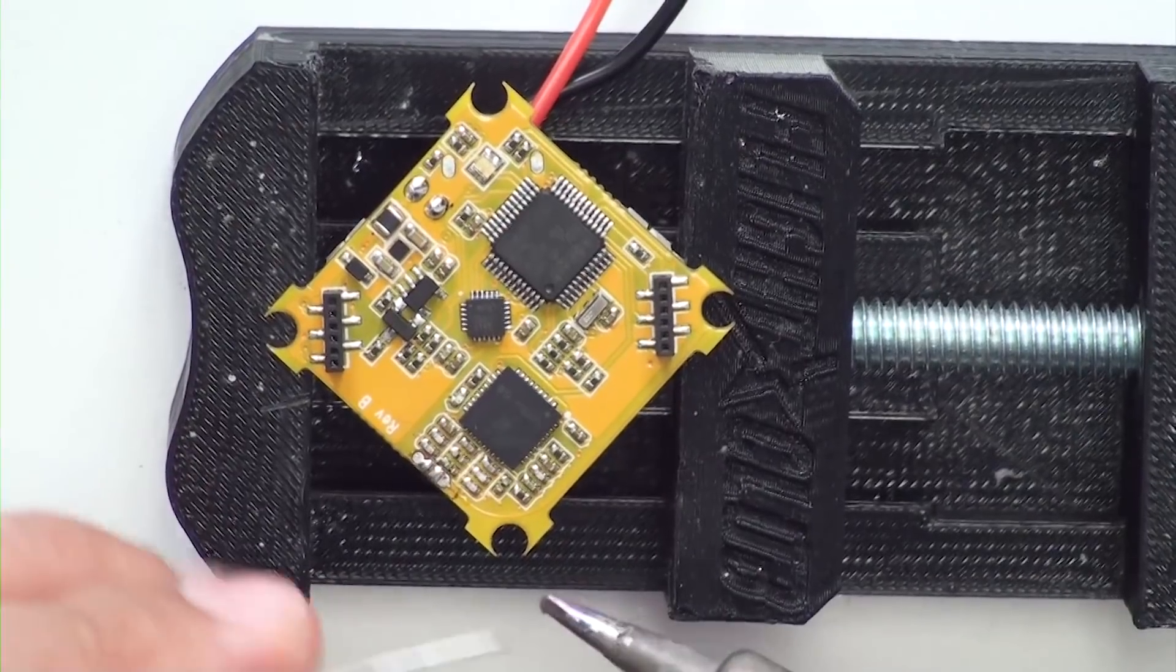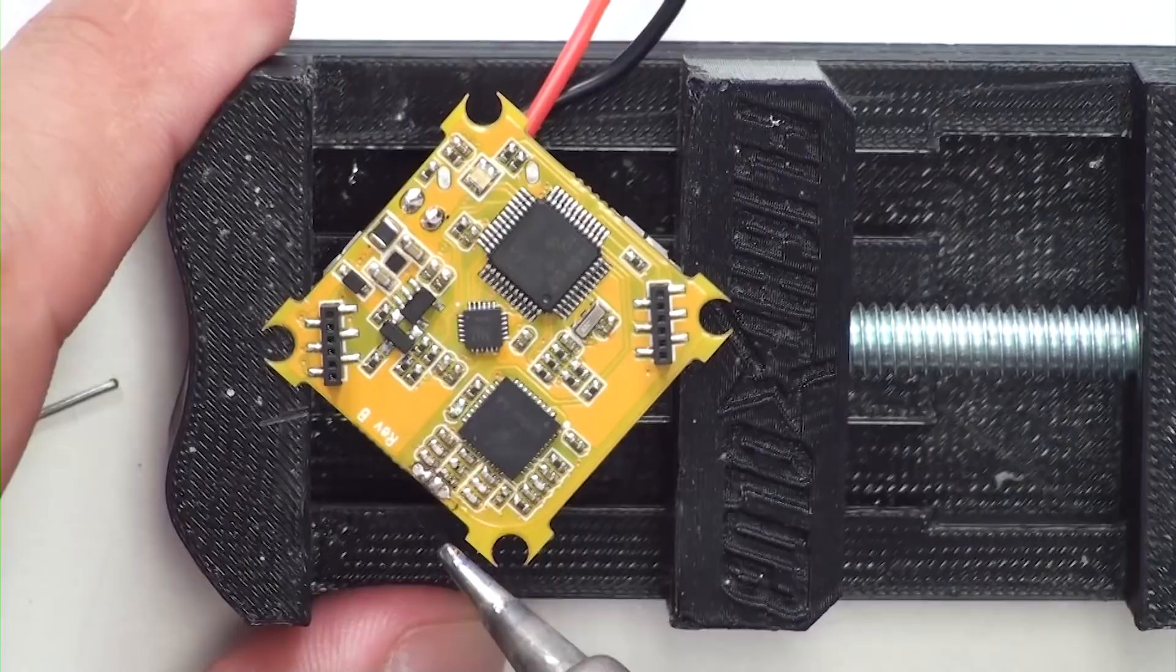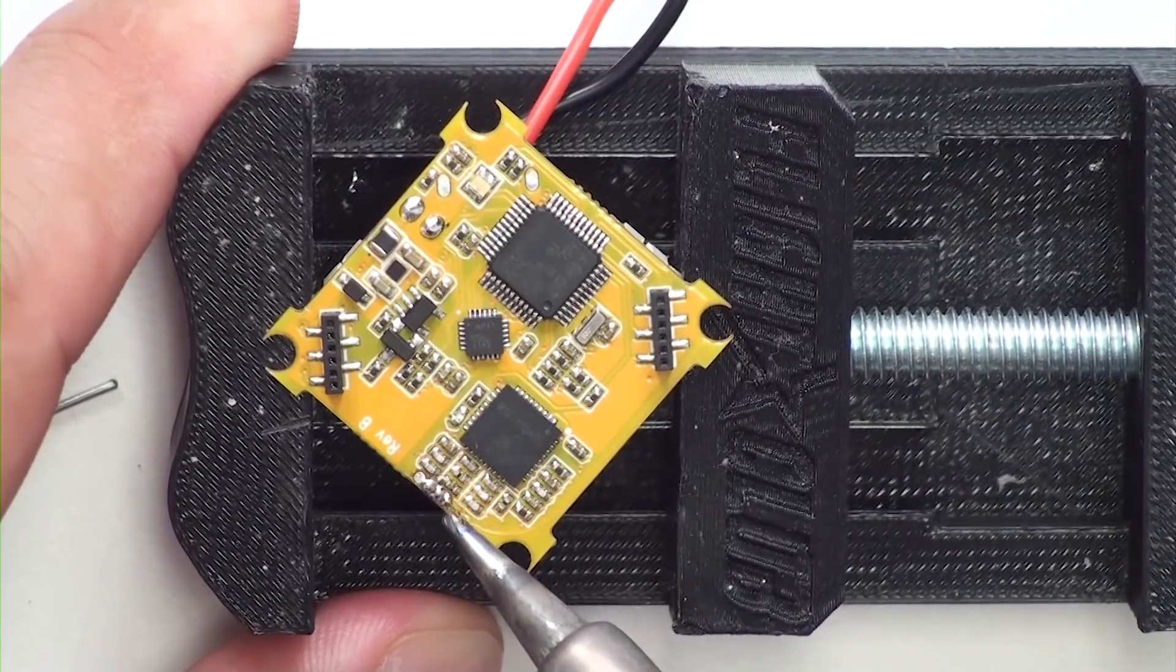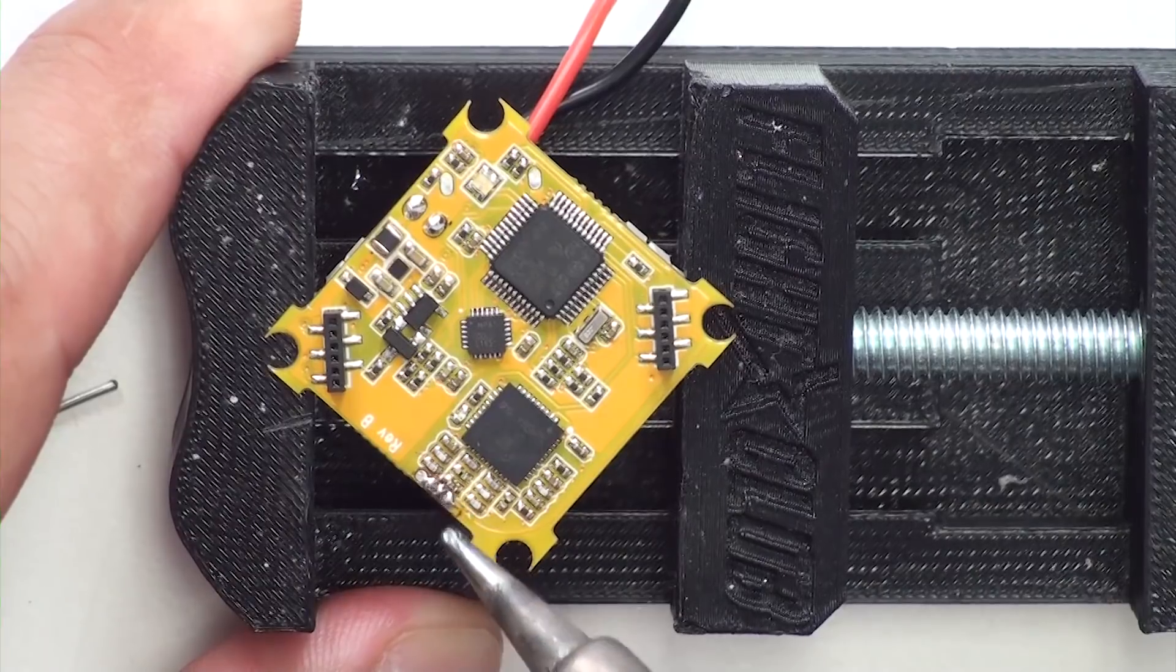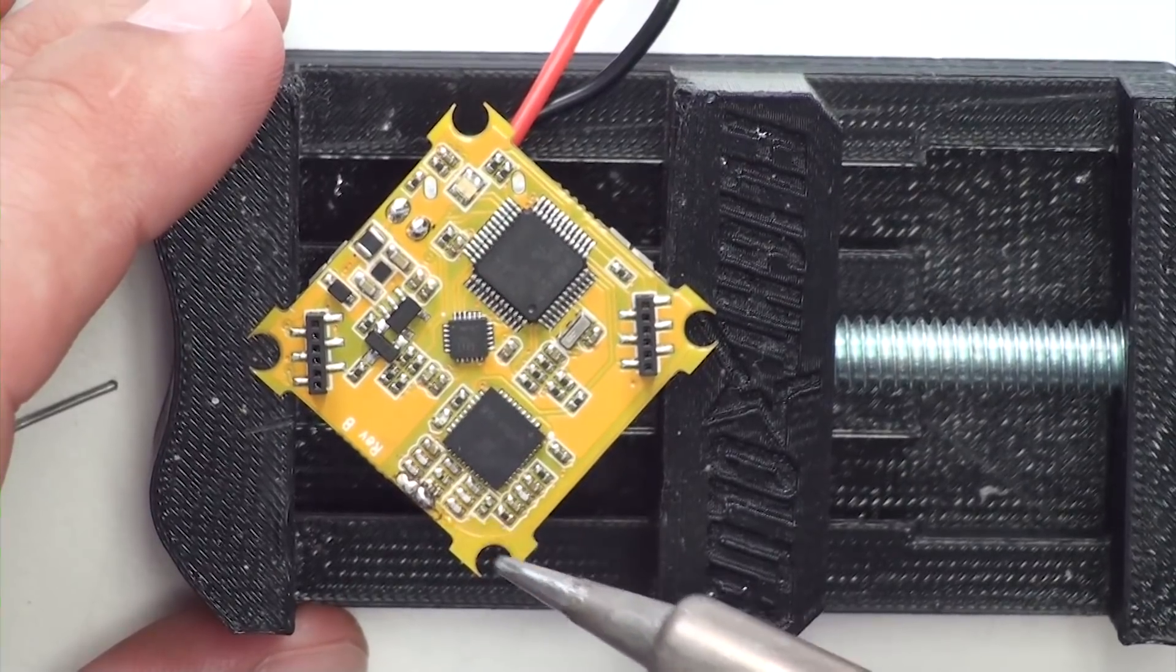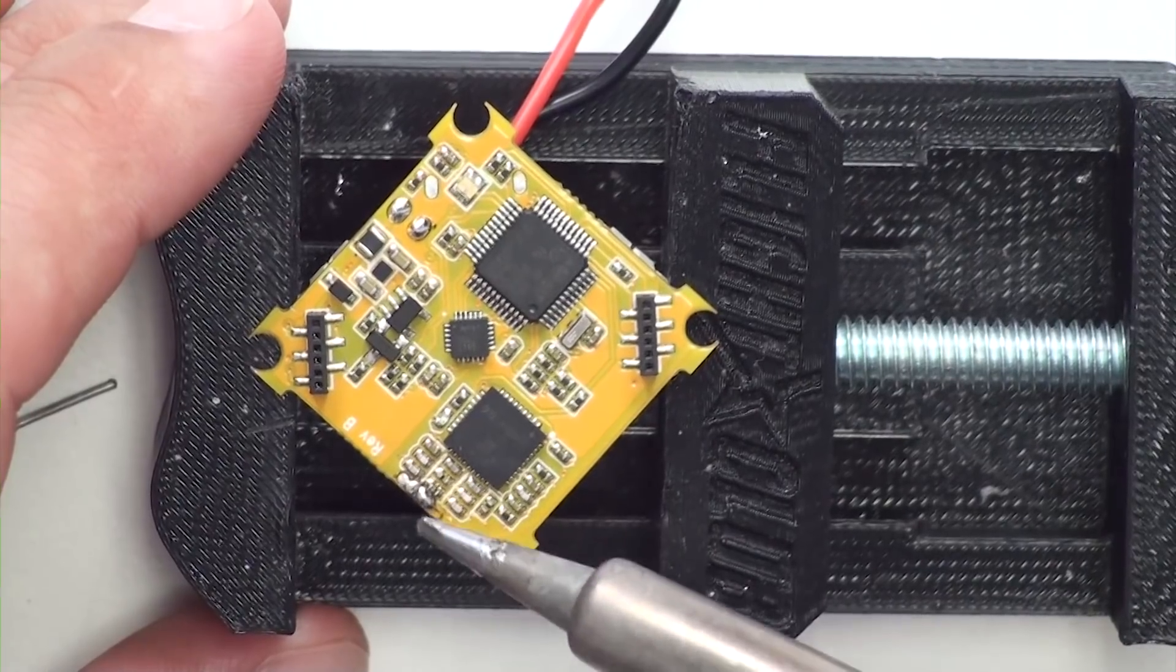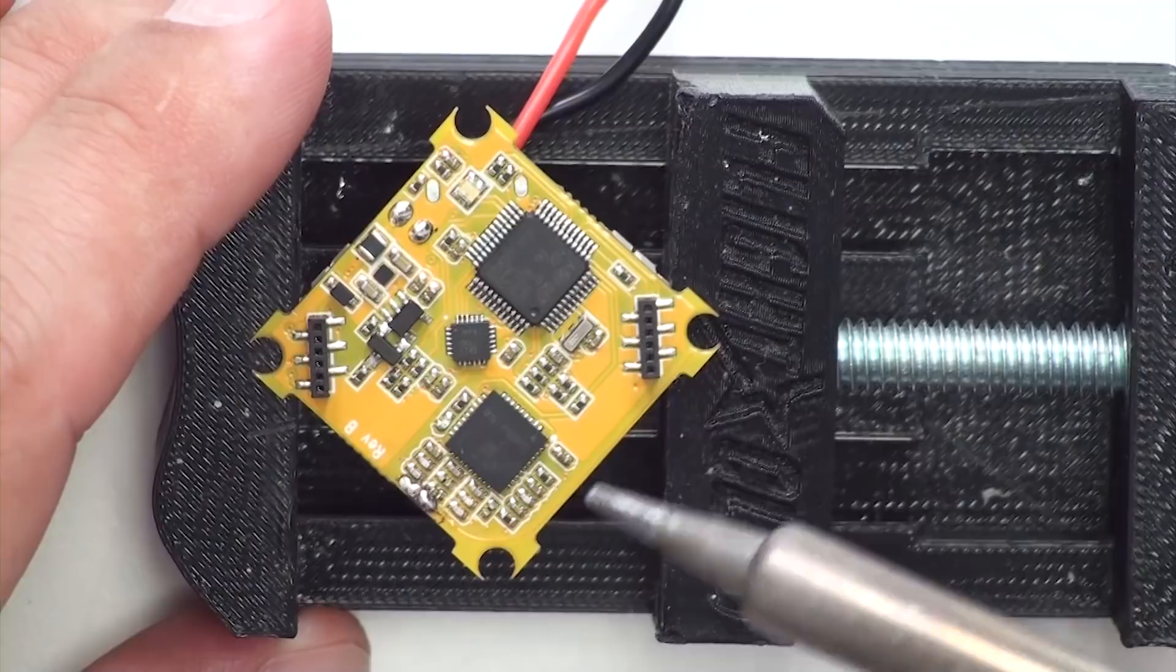Now you just want to take a very small amount of solder, throw it on your tip, and you just want to bridge the front two pads together. Once you have these two front solder pads bridged, not touching the rear ones, this will enable the onboard internal antenna that's embedded into the PCB.